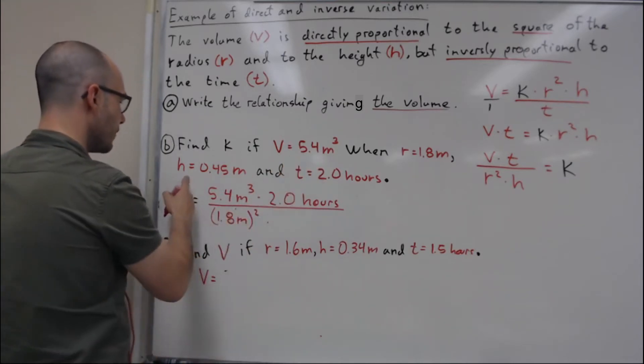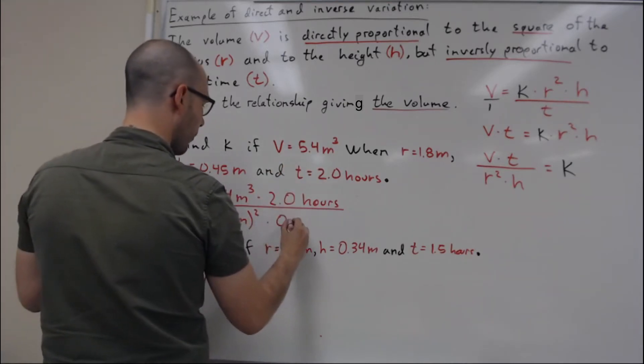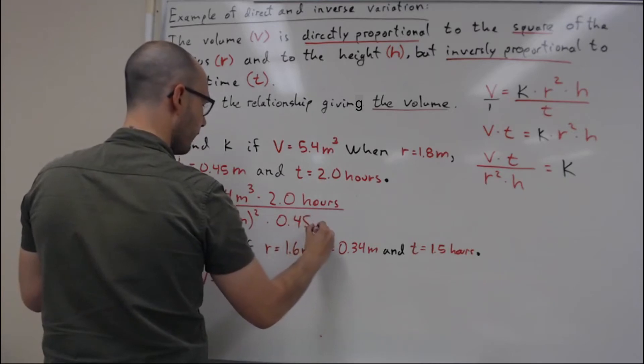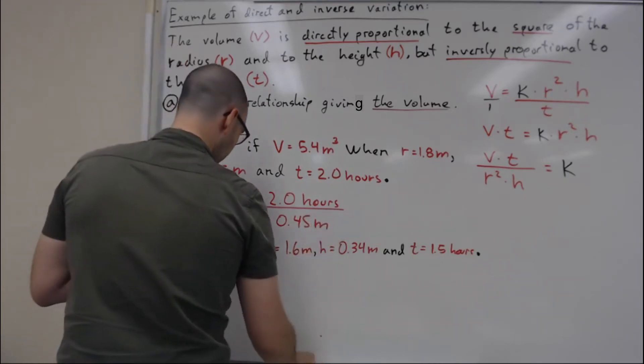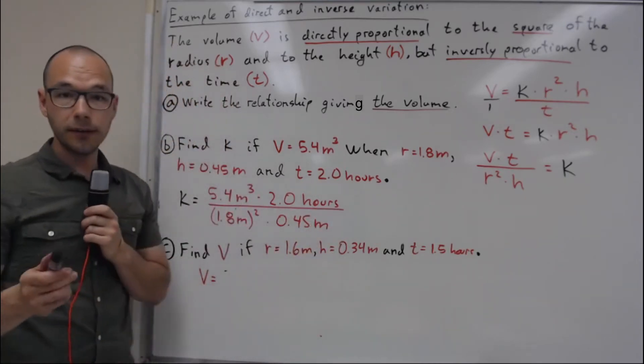All of that over r squared which is 1.8 meter squared multiplied by h which is my height, 0.45 meter.